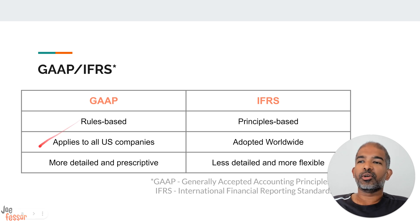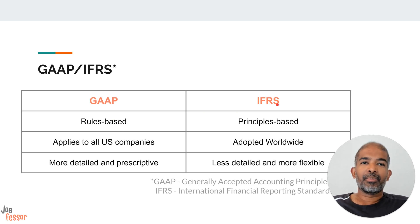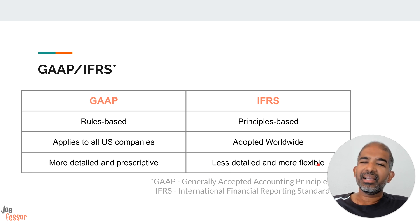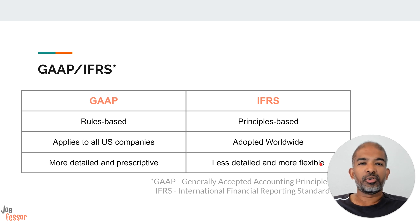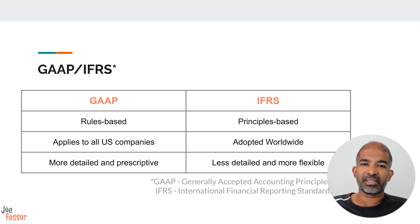GAAP rules are more detailed and prescriptive, which makes it easier for comparability when you want to compare two or more firms using the same rules. But IFRS, because it's less detailed and more flexible, makes direct comparison a little harder. When you compare two or more firms under IFRS, they might have used the same principles, but the way they adapted them might be slightly different, so a direct comparison may not always be feasible.